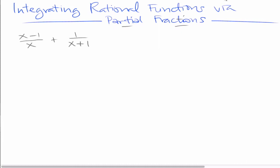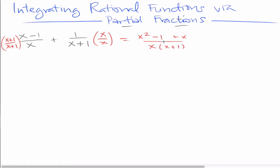So here we have these two rational expressions. If we want to combine them, we find a common denominator, multiply each expression by the form of one required to create a common denominator in each term. What we get is x squared minus 1, multiply these two, and this side gives me plus x, and all of this is over x times x plus 1. So we might write this as x squared plus 1 as the denominator underneath x squared plus x minus 1.